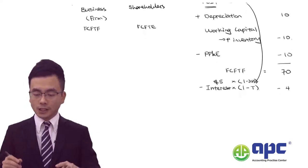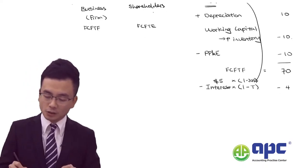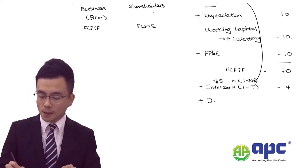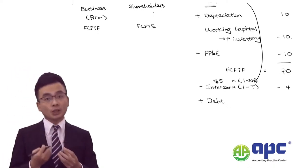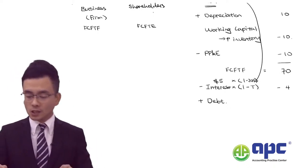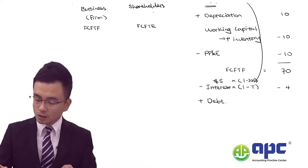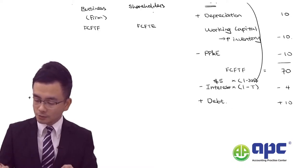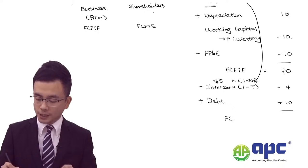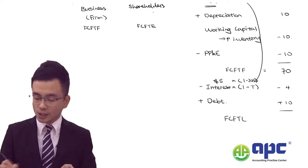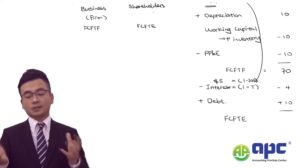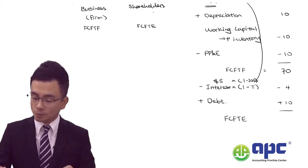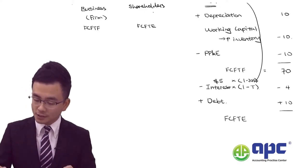We may also need to consider the business issuing additional debt and getting money into the business — let's say $10. The free cash flow to equity is then: 70 minus 4 equals 66, plus 10, equals $76.